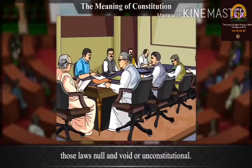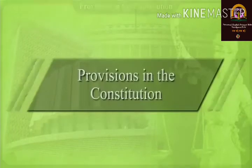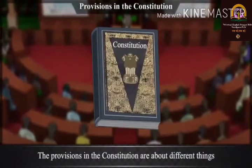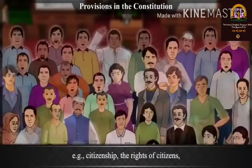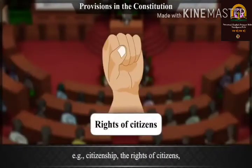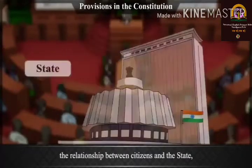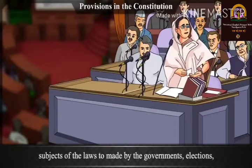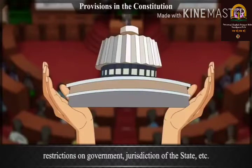Government. Then the next point is: provisions in the constitution. For example, citizenship, rights of citizens, the relationships between citizen and the state — these are all part of the constitution. The same includes the restrictions on government, the royal rights, and the fundamental rights of the people.